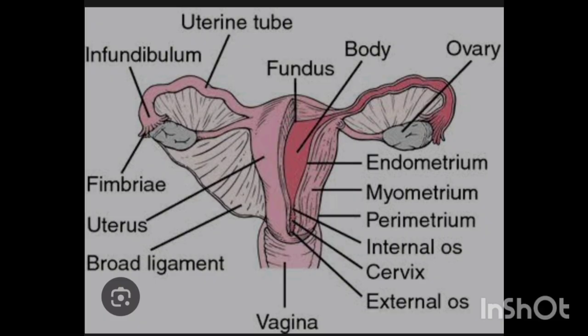The appearance of the ovary on ultrasound is dependent on the phase of the menstrual cycle and also the condition of the ovaries, because there are many pathologies that affect the ovaries, such as simple cysts, complex cysts, and other ovarian conditions.